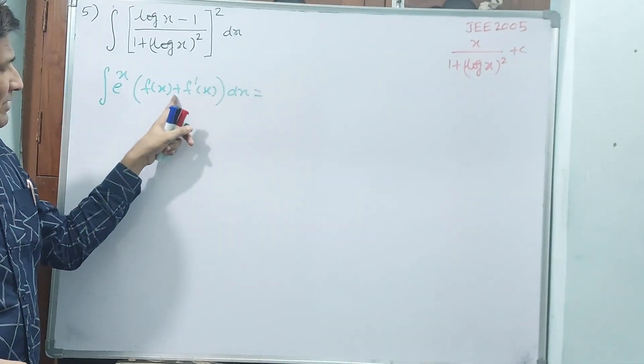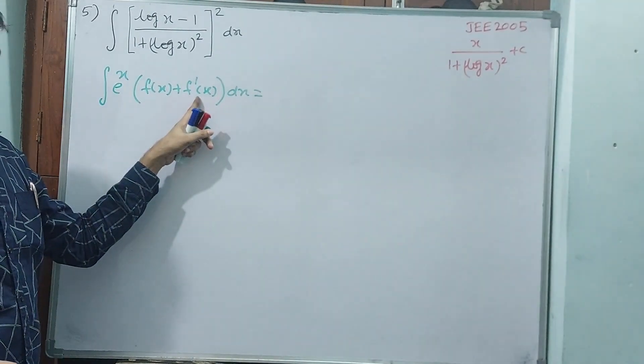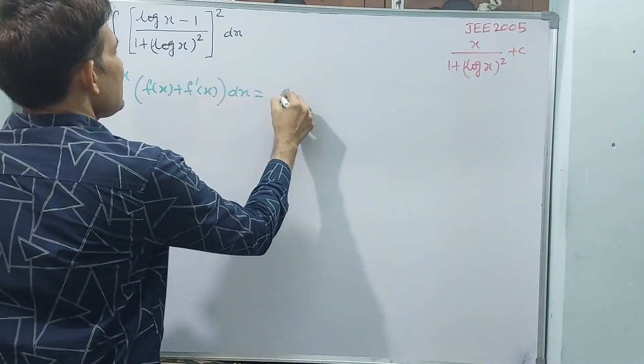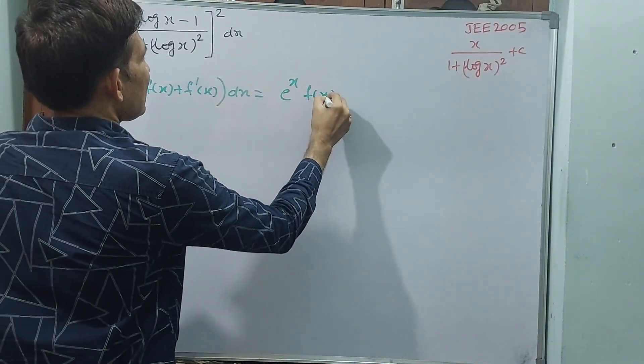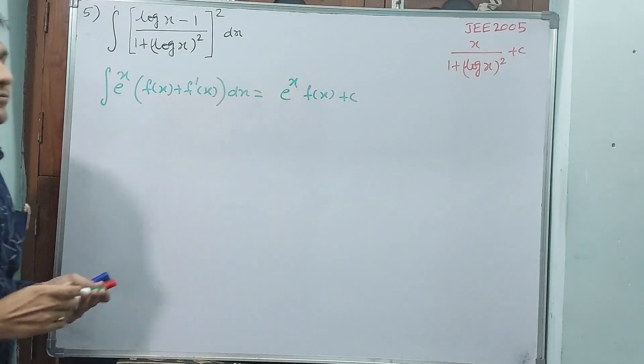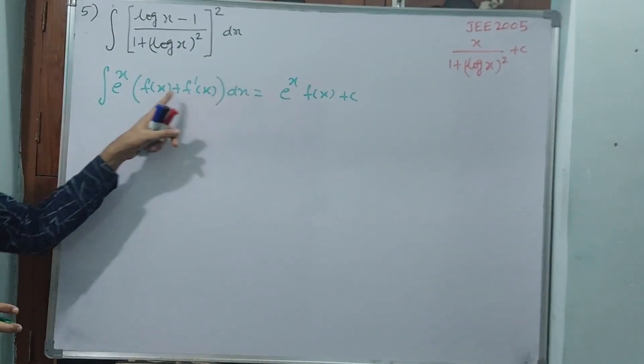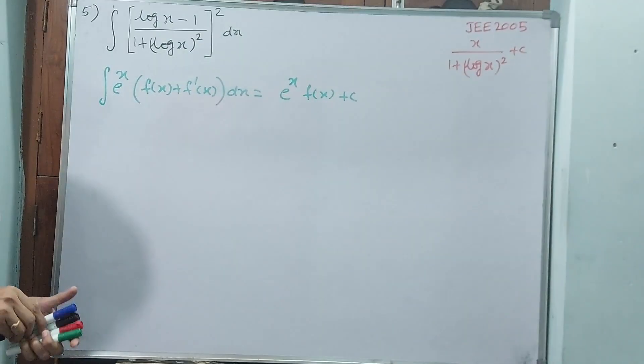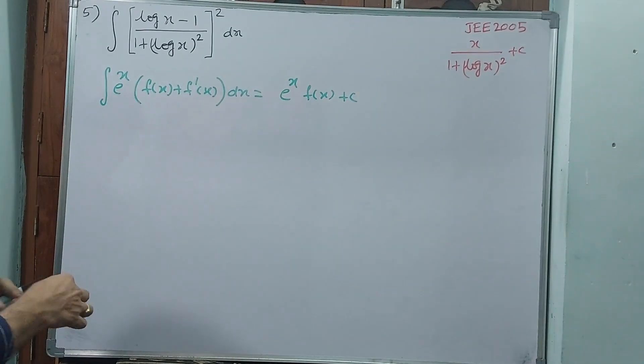Minus is there also, you make plus and you make this minus like that. Then the answer is e power x into f of x plus c. This is the answer, this formula we are using here, this is your formula.